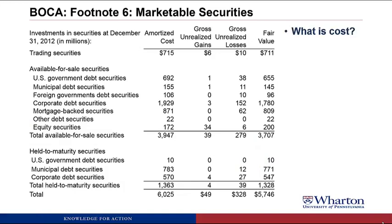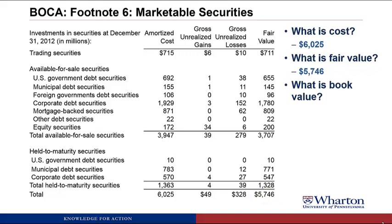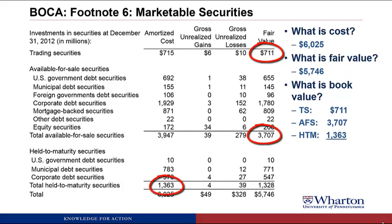Let's start answering some of these questions, starting with what's the cost of those securities? We look in the amortized cost column and we can see at the bottom it's 6,025. What's the fair value? There is a total at the bottom of the fair value column: 5,746. What's the book value — the amount that shows up on the balance sheet? That's a little more complicated. Trading securities are going to show up at their fair value, 711. Available for sale securities will show up at their fair value, 3,707. But held to maturity will show up at their cost, 1,363. So what shows up as book value on the balance sheet is 5,781.